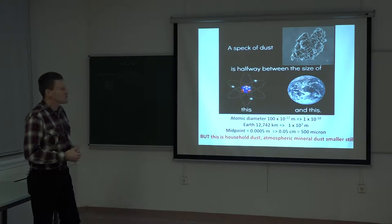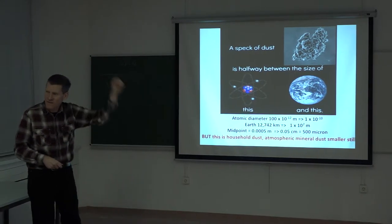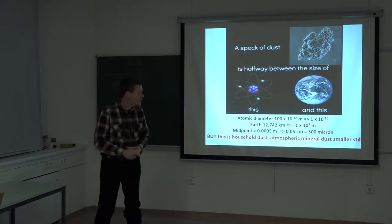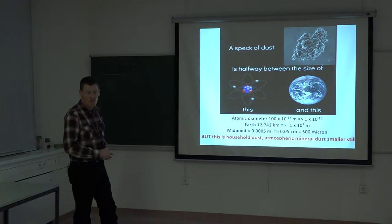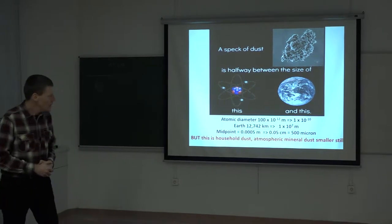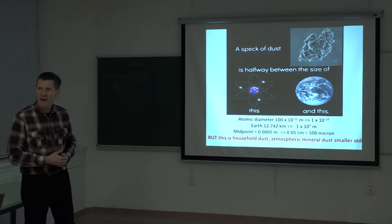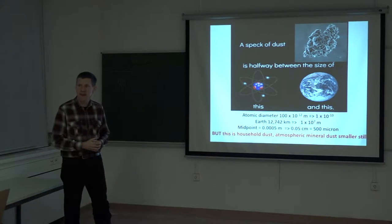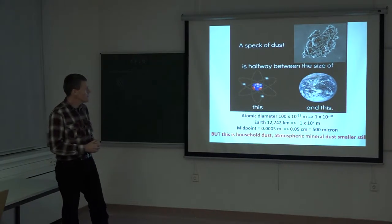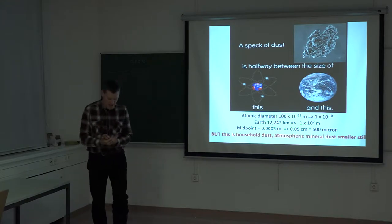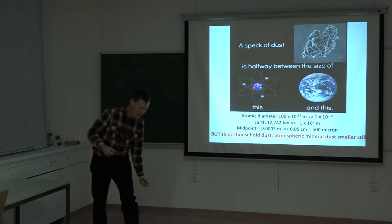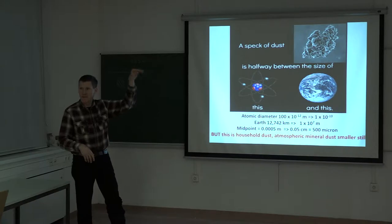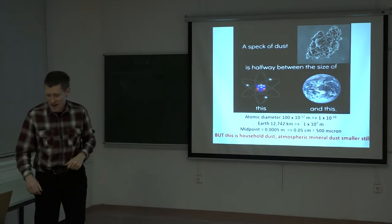But that size particle of dust in the air doesn't stay in the air very long — it drops out quite quickly. When we're talking about mineral dust, we're talking about things that are maybe 100 times smaller than that, so maybe 5 microns. And 5 microns is big enough to stay up in the air for quite some time. The smaller a particle gets, the longer it stays in the atmosphere — the lifetime of that particle increases.